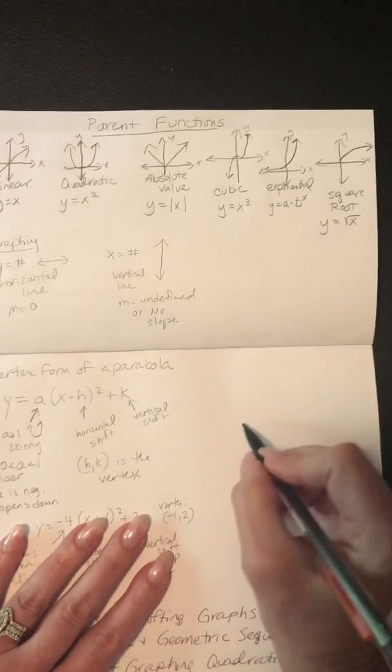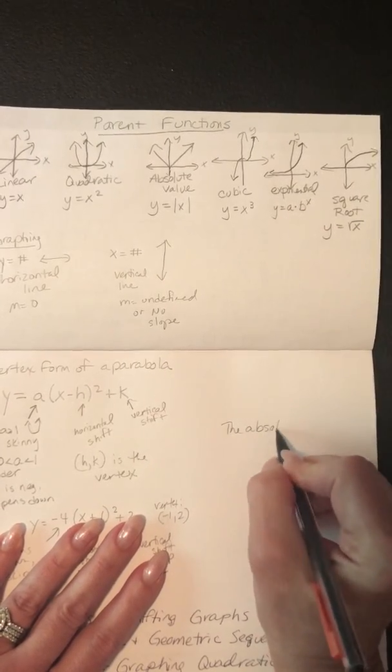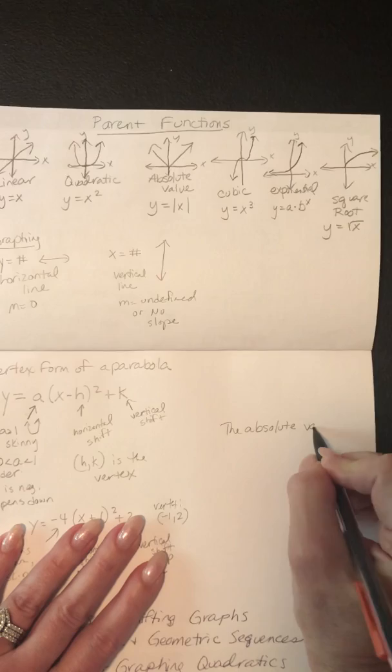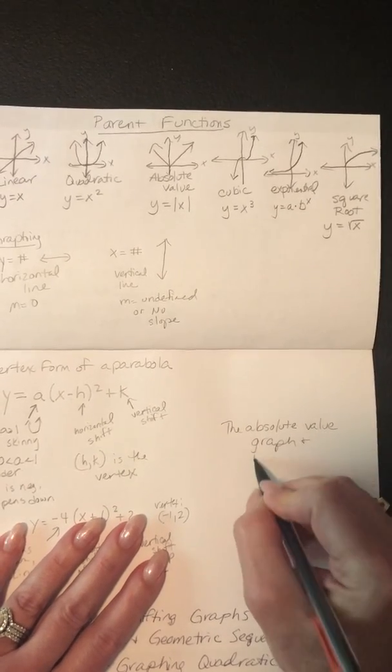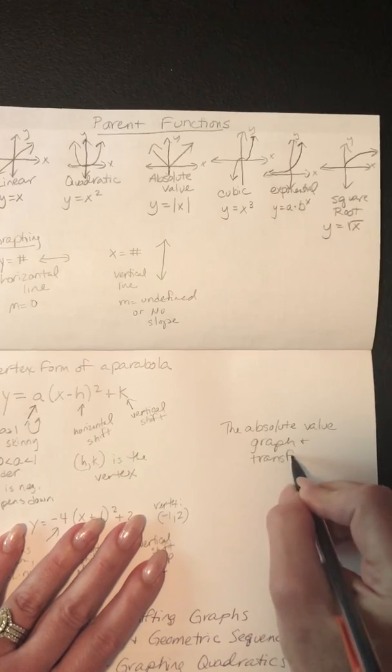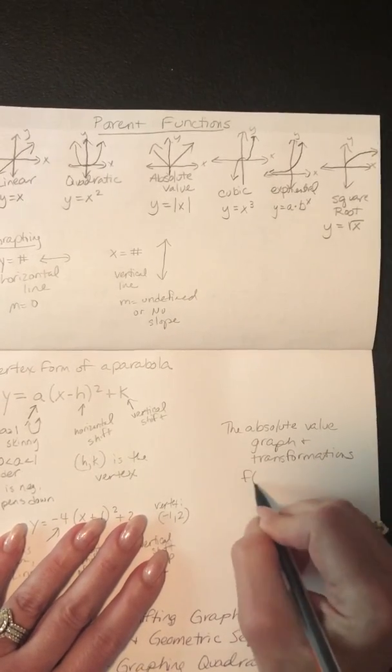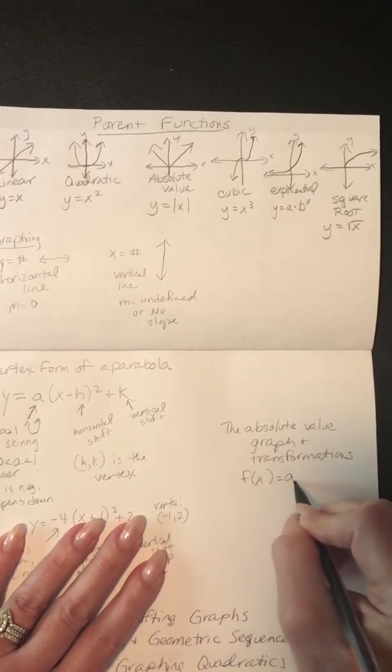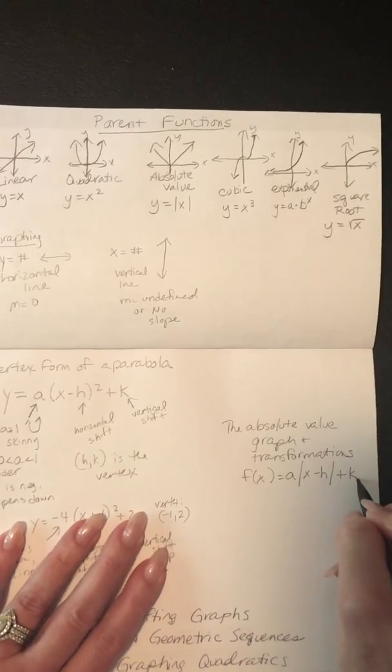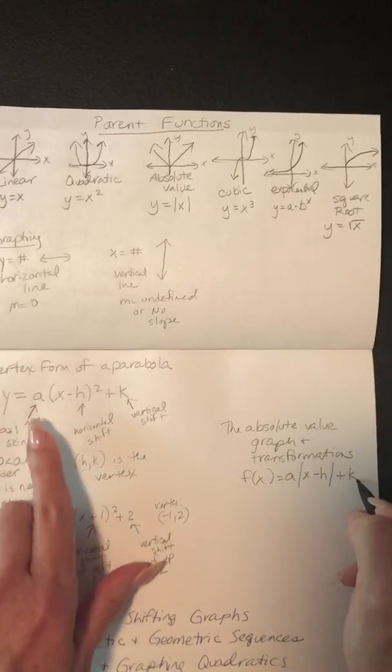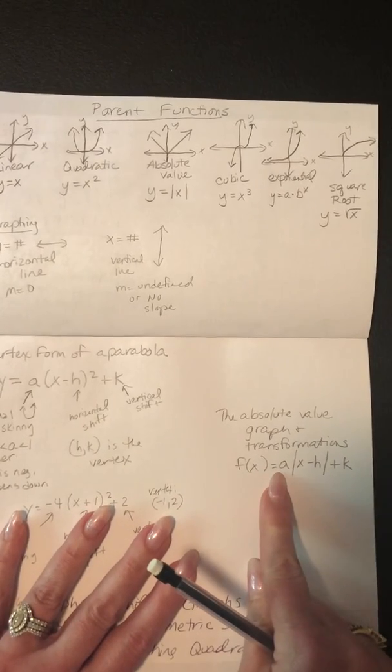It also works that way in absolute values. So the absolute value graph and transformations would be like f of x equals a and then its absolute value of x minus h plus k. And it works exactly the same way as the same way as this one did.